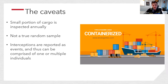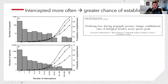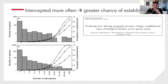Interceptions are also reported as events, so one interception could represent a single individual or dozens in an infested log. Not every species in the interception data has become established, and some species that have invaded never show up in the interception records. Despite these limitations, work by Brockerhoff and colleagues using the same inspection data showed that the more frequently a given species is intercepted, the more likely it is to become established.